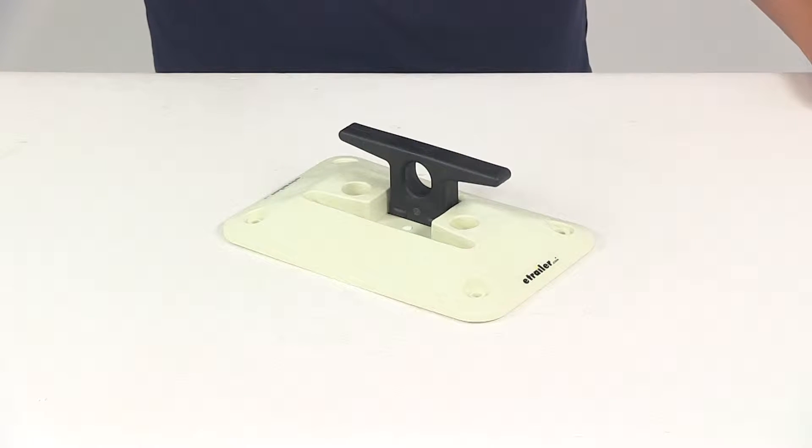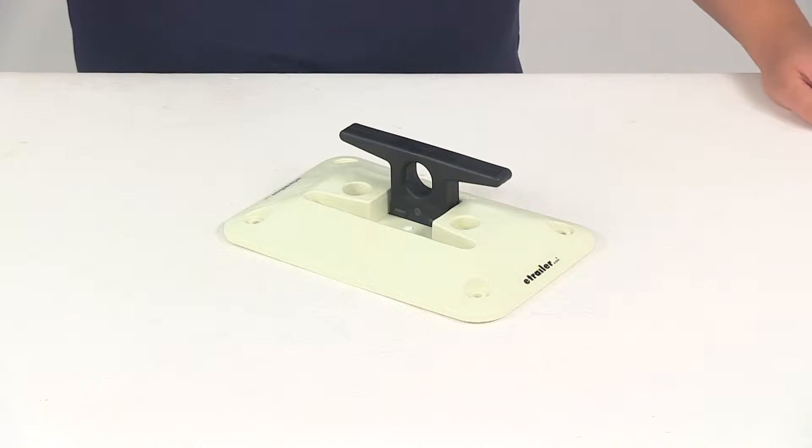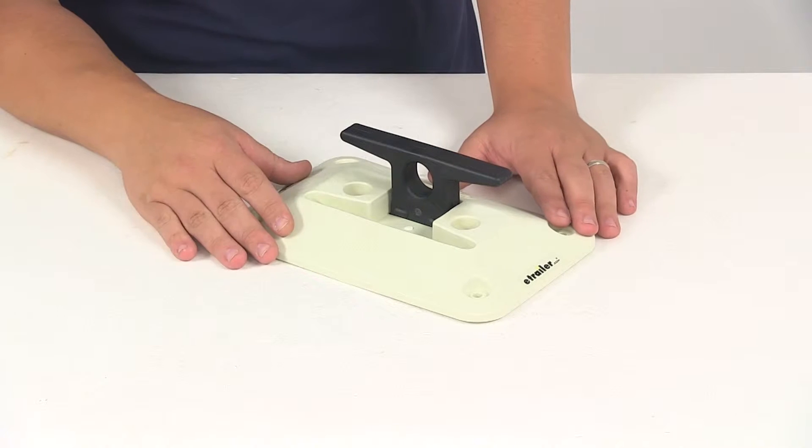Today we're going to be taking a look at part number CM02101. This is a SEPA retractable dock cleat. This unit is going to mount to your dock so you can easily secure your boat or personal watercraft.